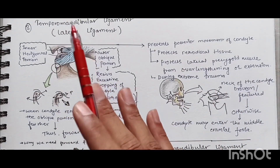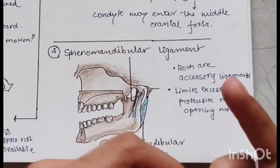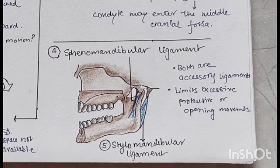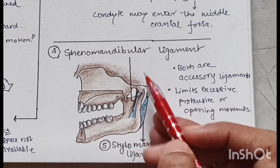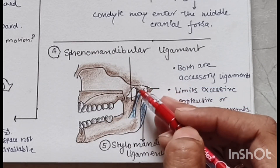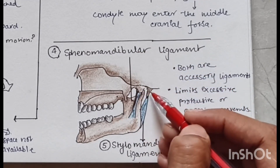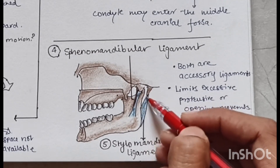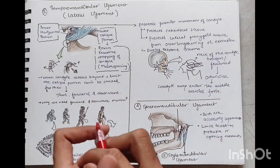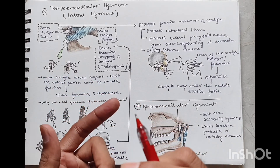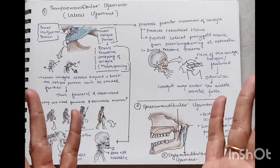The two accessory ligaments are the sphenomandibular ligament and the stylomandibular ligament, which both limit excessive protrusive or opening movement of the mandible. The sphenomandibular ligament attaches from the spine of the sphenoid to the lingula of the mandible. The stylomandibular ligament arises from the styloid process and attaches to the posterior border of the mandible at the angle. This concludes the anatomy, innervation, vascularization, and ligaments of the TMJ.